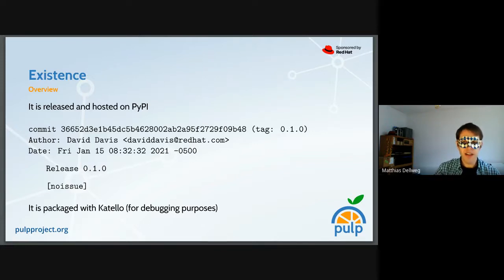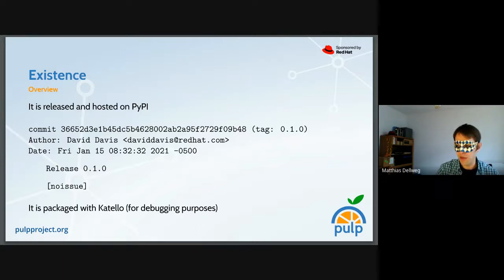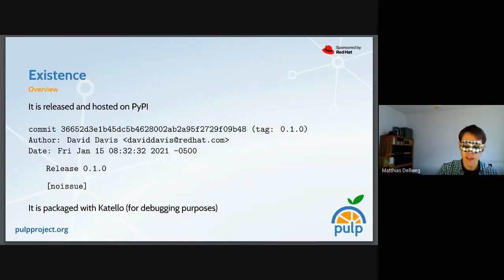The CLI tries to be independent of PULP Core versions, which means we can release it independently. We anticipate it will work with the next version because the REST API shouldn't change that much. If it changes, we adjust and release. But if it doesn't change and we don't add features, there's no need to release the CLI with every PULP Core or plugin release. It is also packaged with Katello — which integrates with PULP — in the RPM repositories, mainly for debugging purposes.